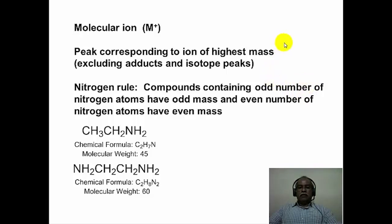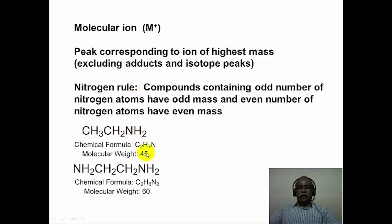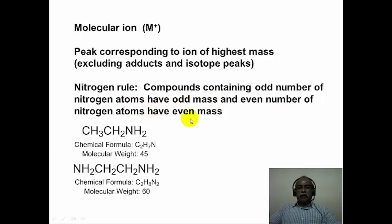What are the characteristics of a molecular ion peak? Usually the peak corresponding to the highest mass-to-charge ratio — as long as it is not forming adducts and isotope peaks are not present — corresponds to the molecular ion. There is something called the nitrogen rule: whenever an organic molecule contains an odd number of nitrogen atoms, the molecular weight will also be odd because nitrogen is a trivalent element. When there are an even number of nitrogen atoms present, the molecular weight will be even.